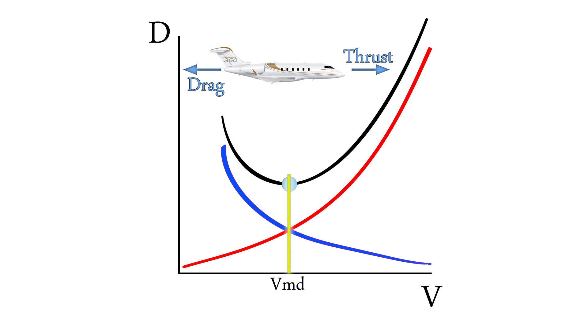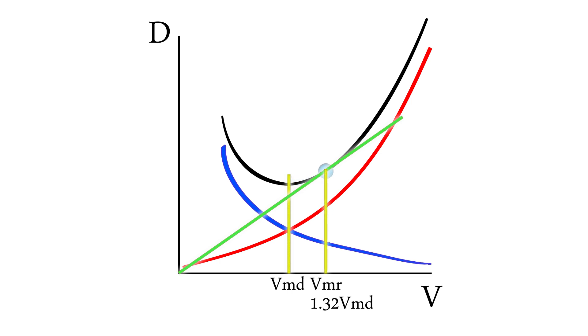This is also the speed for maximum endurance, as we burn the least amount of fuel. The tangent of the total drag curve is the maximum range speed, VMR, and is approximately 1.32 times higher than the minimum drag speed.